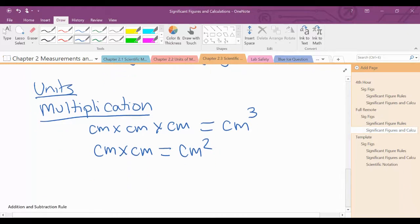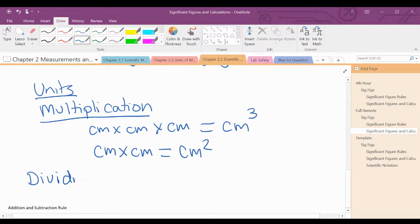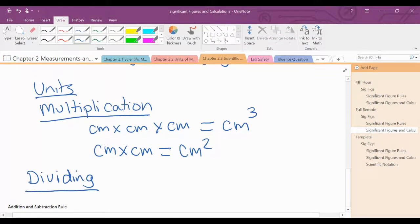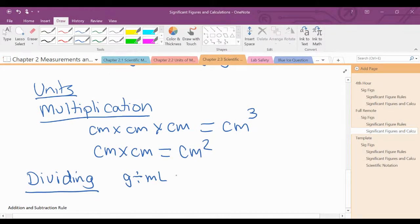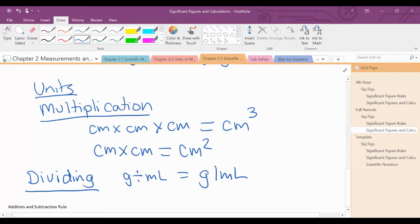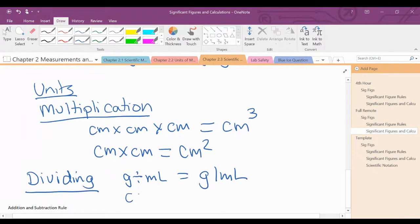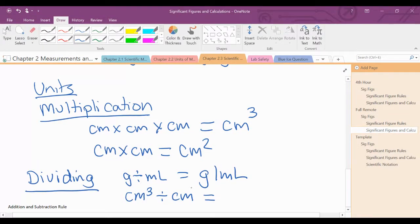If I'm dividing, so I could have a derived unit, grams divided by milliliters, it gives me grams per milliliter. That should look familiar, that's density. If I had centimeters cubed divided by centimeters, then I subtract, cubed minus 1 is understood, so 3 minus 1 would be centimeters squared.